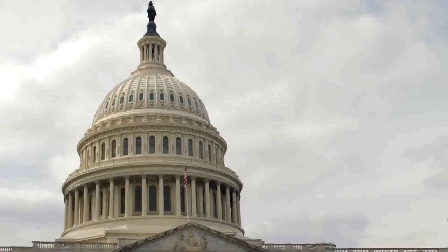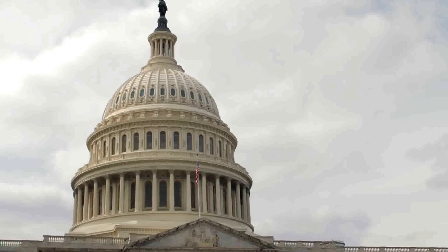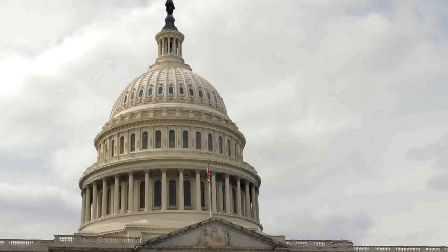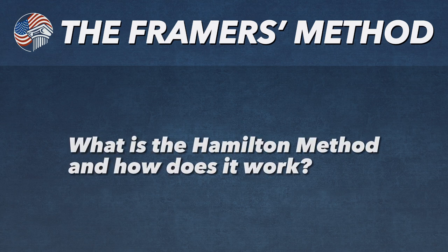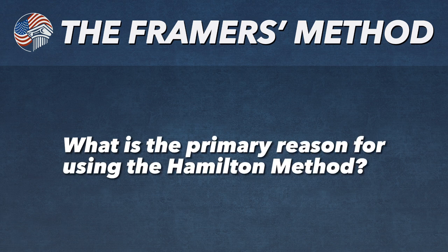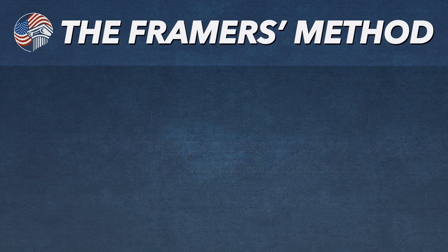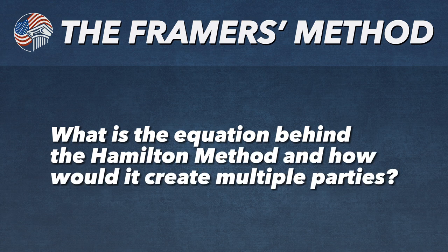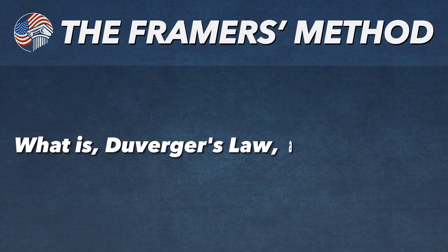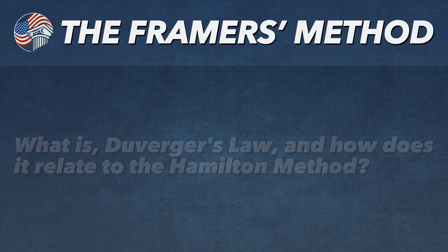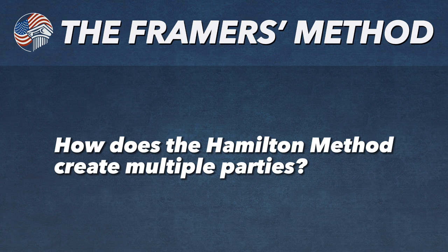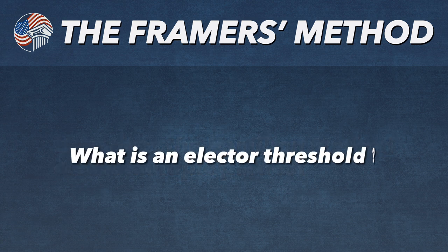In this video, we will describe the specific reforms to re-establish the United States as a republic in order to defeat populism and tyranny. The primary questions for this video are: what is the Hamilton method and how does it work, and what is the primary reason for using the Hamilton method? Secondary questions include: what is the equation behind the Hamilton method and how would it create multiple parties, what is Duverger's law and how does it relate to the Hamilton method, how does the Hamilton method create multiple parties, and what is an elector threshold?